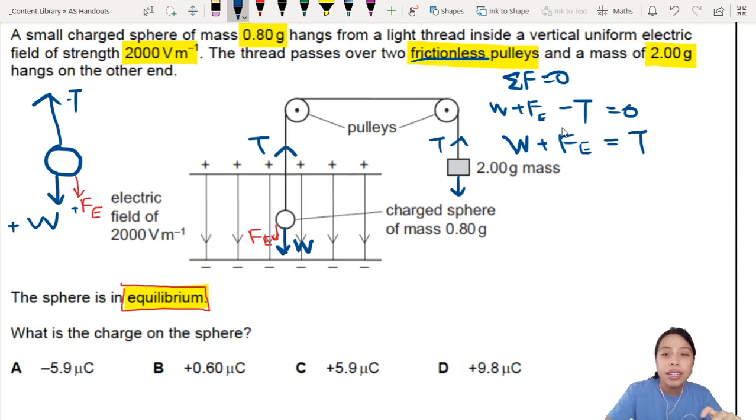Then we can plug in everything we know. So the W here is the weight of this sphere. So that is 0.8 times 10^-3 times 9.81. That's the weight of the small sphere plus F is QE equals to the tension which is related to the weight of this block on the right side. So that would be 2 times 10^-3 times 9.81.